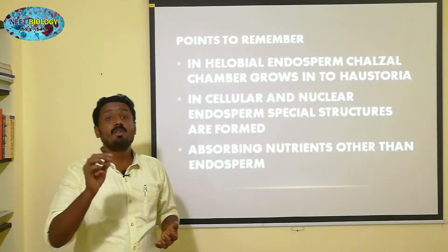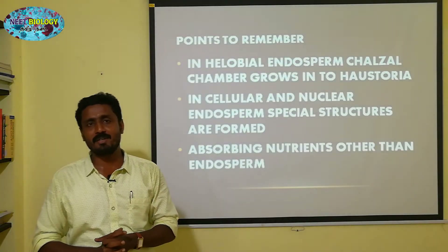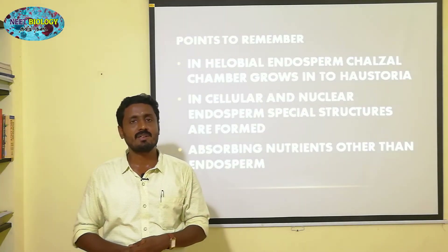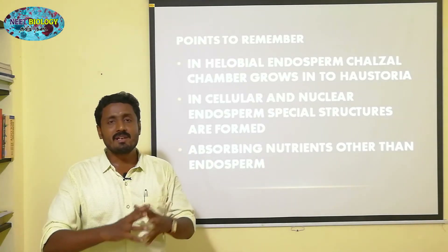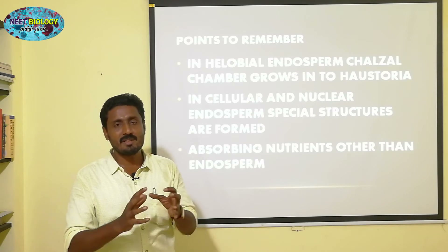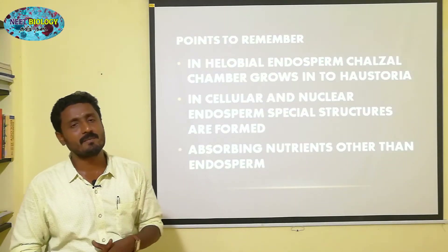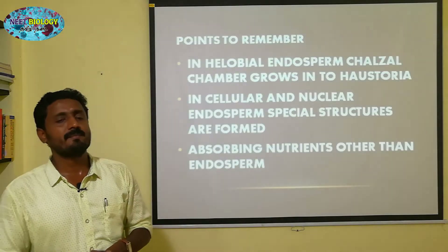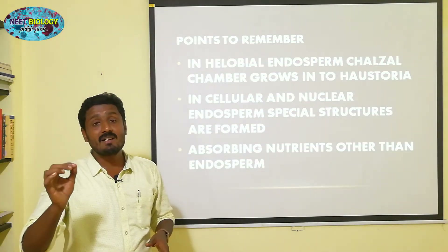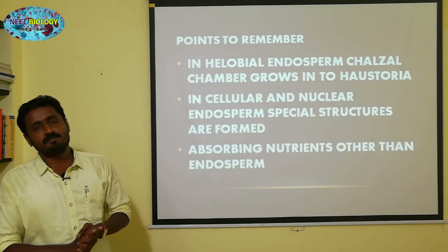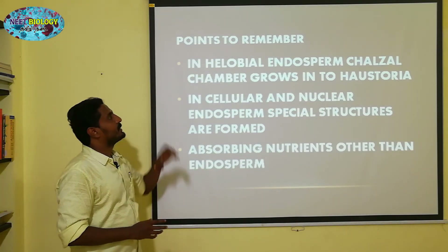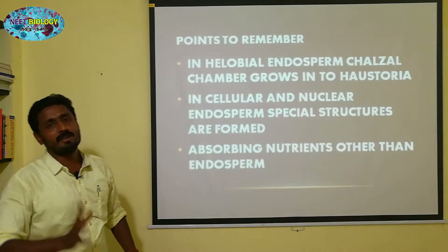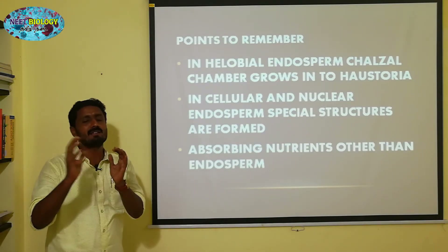In this helobial endosperm, there are two types of chambers. There is a link in the description below. In this video you can see the helobial endosperm, cellular endosperm, and nuclear endosperm. There is an indication of each type of endosperm — nuclear endosperm and cellular endosperm are shown.